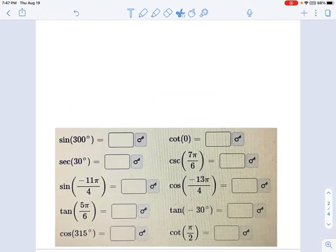Okay, so in this question we're asked a whole bunch of stuff. We're saying what is the sine of 300, what is the secant of 30, and so on and so on. It may look like a lot, but if you look closely you'll see that all of these are special angles.